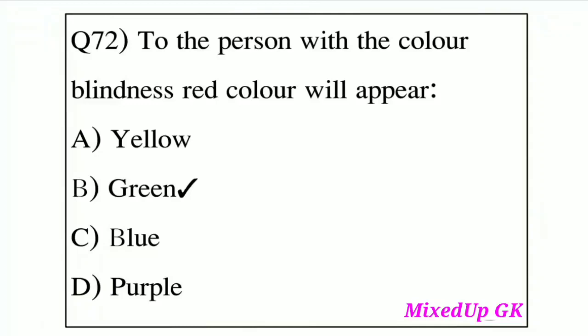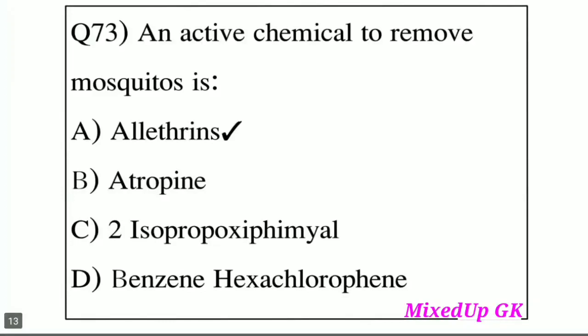Question number 72: To a person with color blindness, the red color will appear as which color? Option A: Yellow. Option B: Green. Option C: Blue. Option D: Purple. The answer is Option B, Green. A person with color blindness sees red as green.